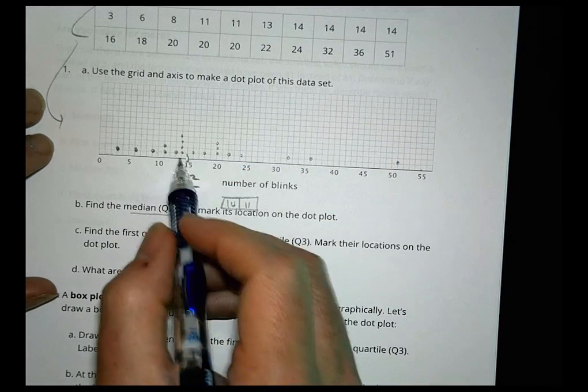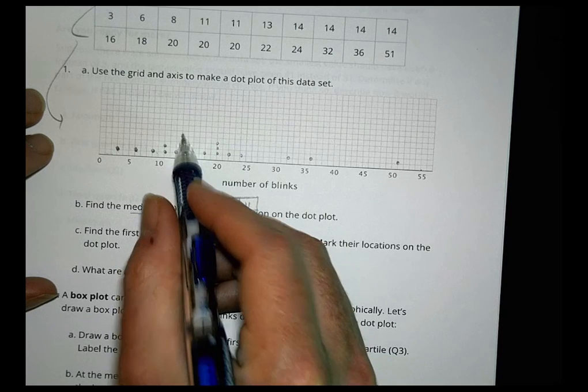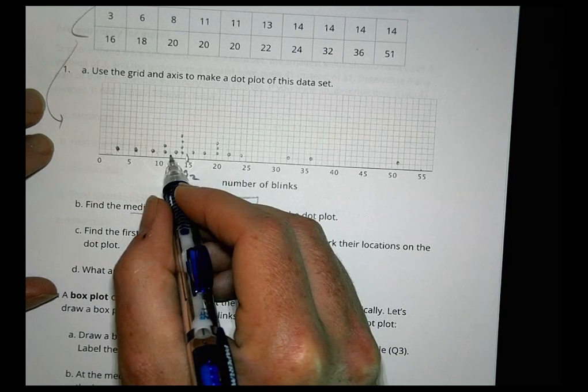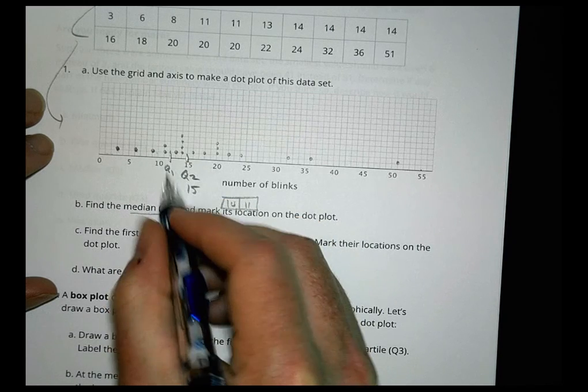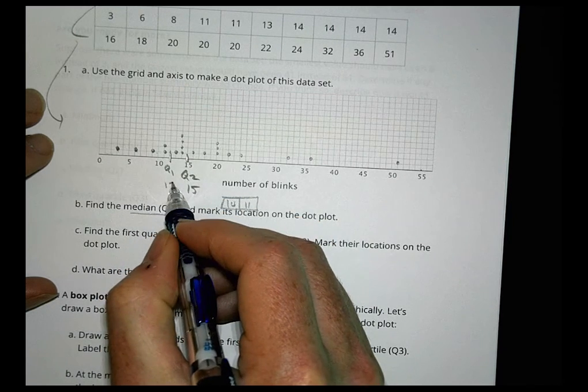So quartile one is going to be between the ten. So I'm going to go out five: one, two, three, four, five, and five. So it comes in between these guys right there. There's quartile one, which is located at twelve.